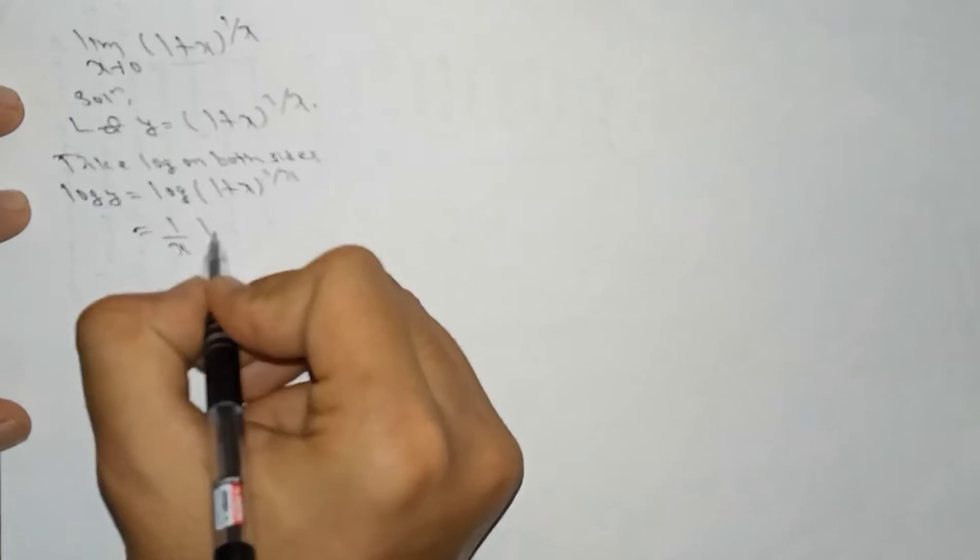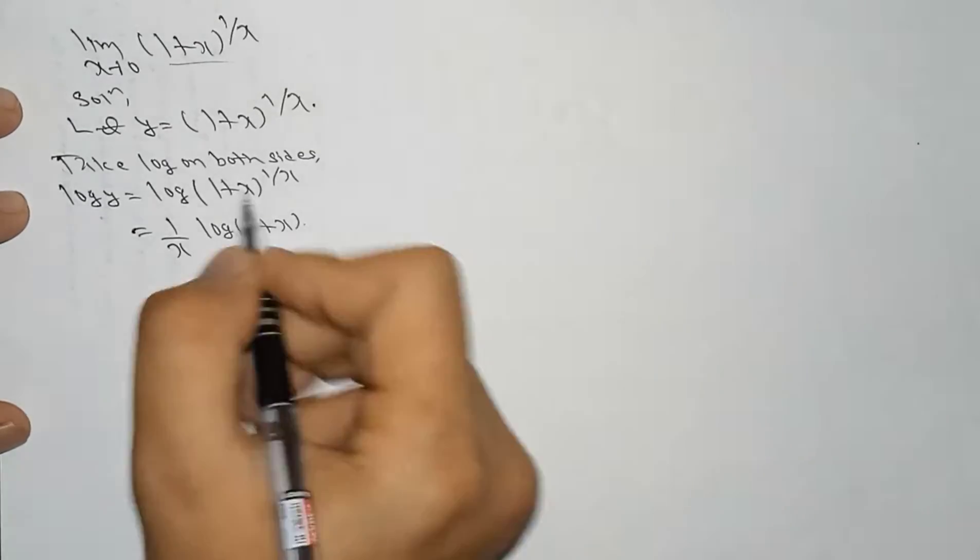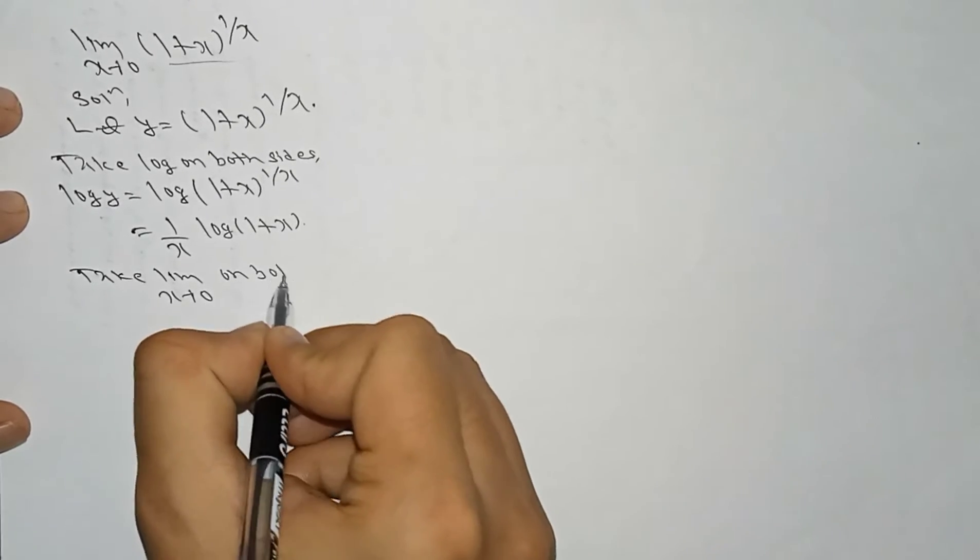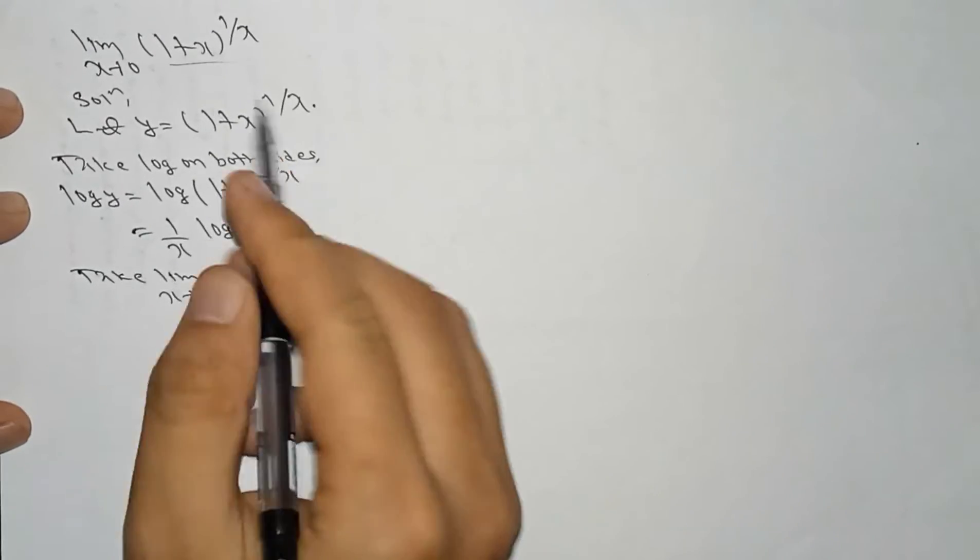...0 on both sides, x tends to 0 on both sides. Yes, here in the question we have limit x tends to 0. Okay, so we have taken limit x tends to 0. So write as it is and it...